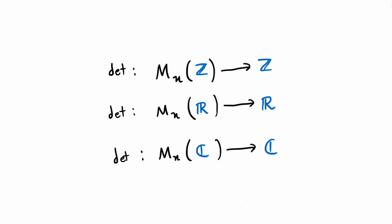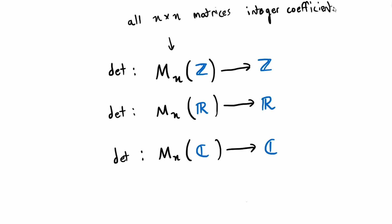Now I'm going to be more specific about what I mean by taking matrices into numbers. We can think of the set of all n by n matrices, denoted M_n(Z), as the set of all n by n matrices with integer coefficients. What this means is that the determinant is a map that takes matrices with integer coefficients and maps them to an integer. Likewise, for the set of all n by n matrices with real coefficients, the determinant is going to be some real number, and analogously for matrices with complex elements.